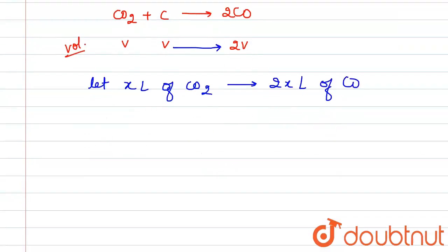So volume of CO2 that is left, that will equal 1 minus x. Now total volume we have, so total volume that is given in the question is 1.4 liter.